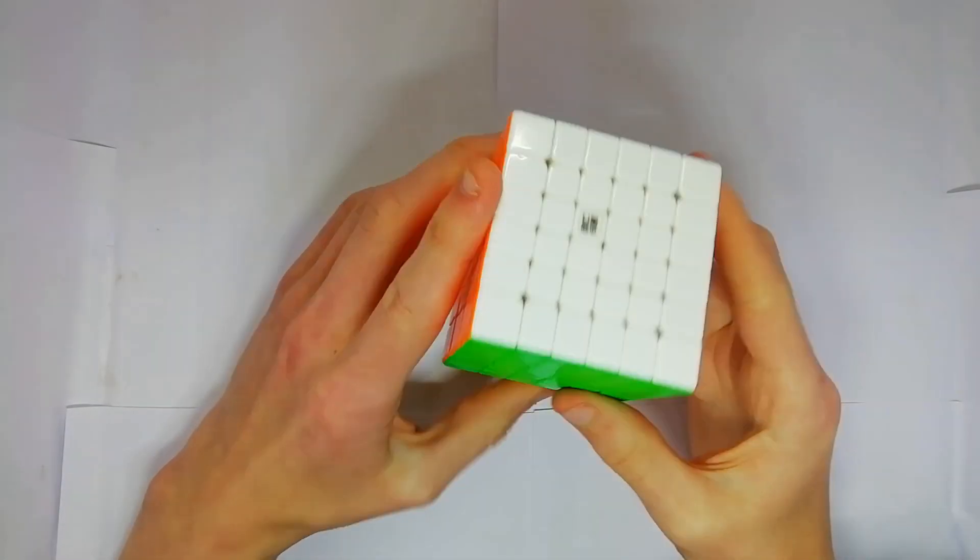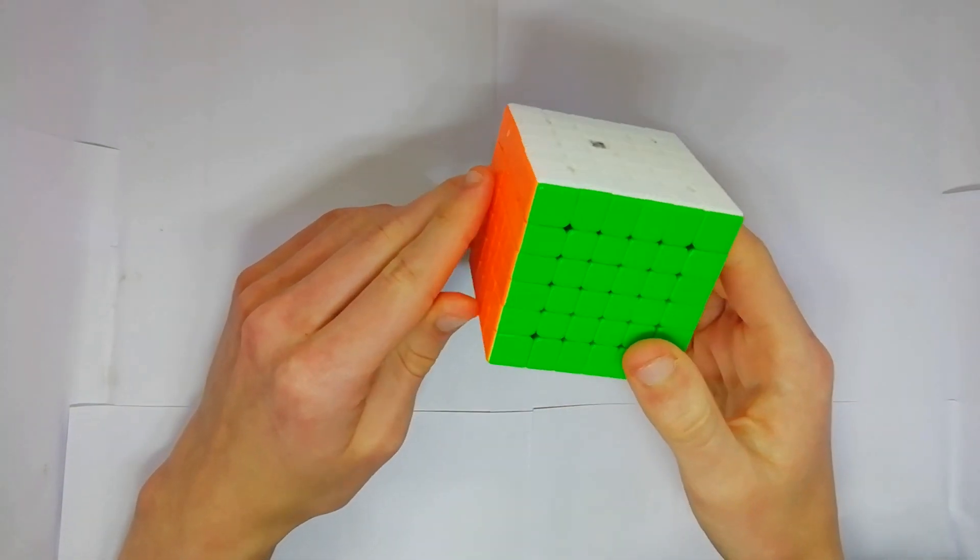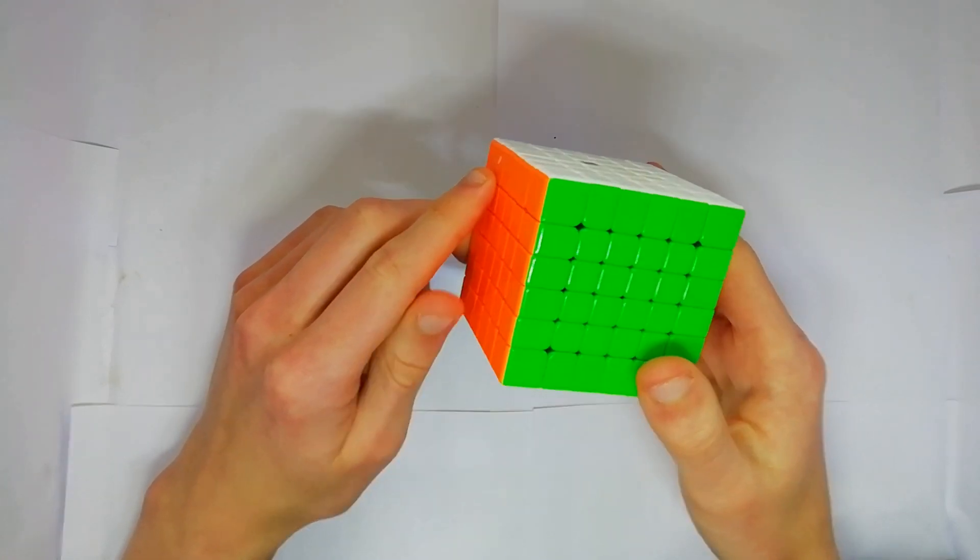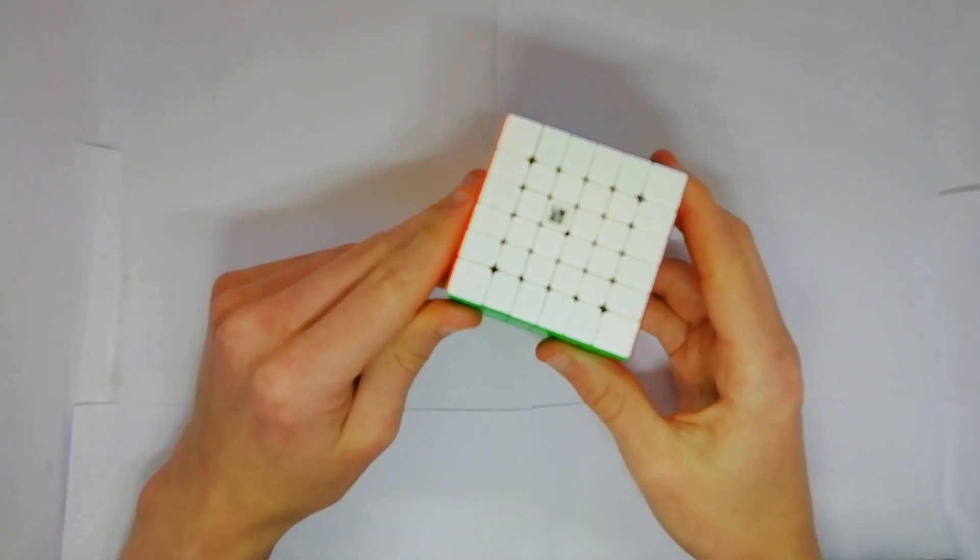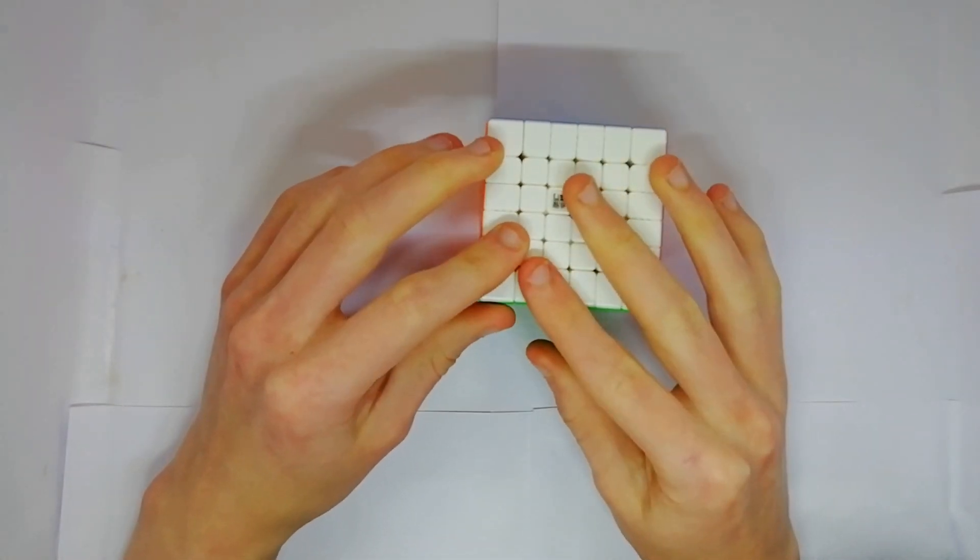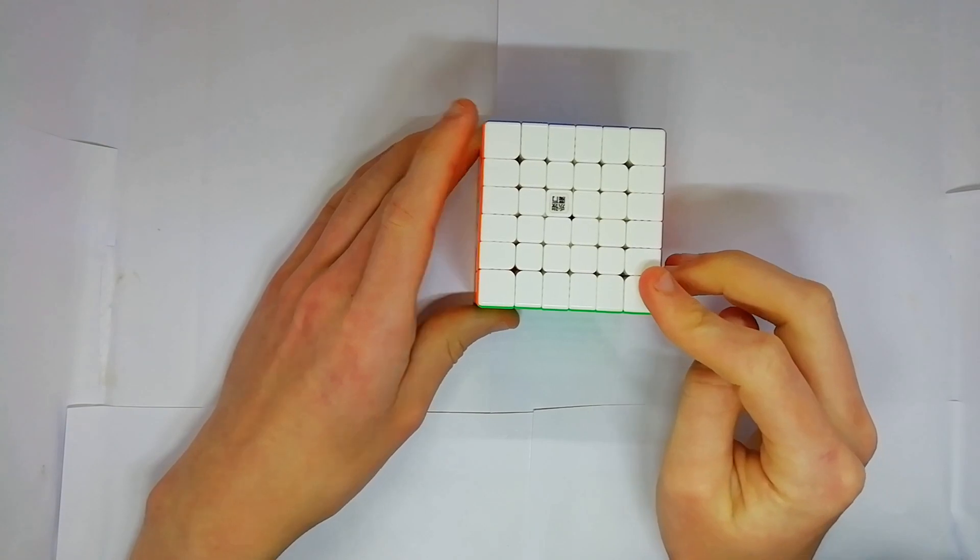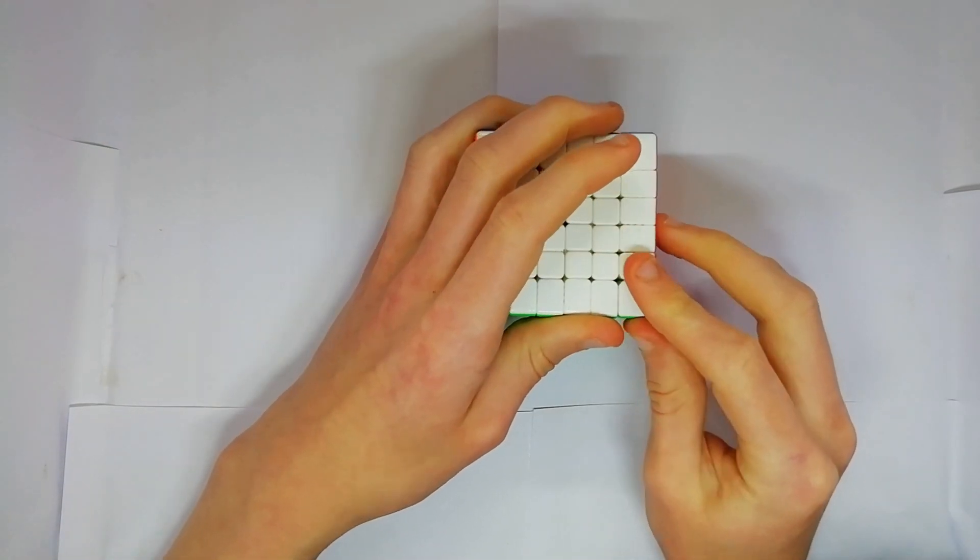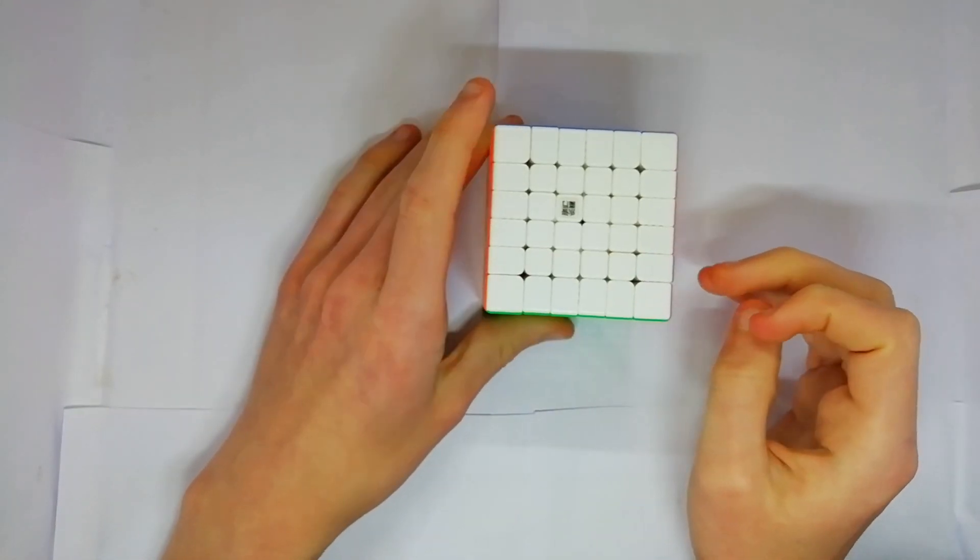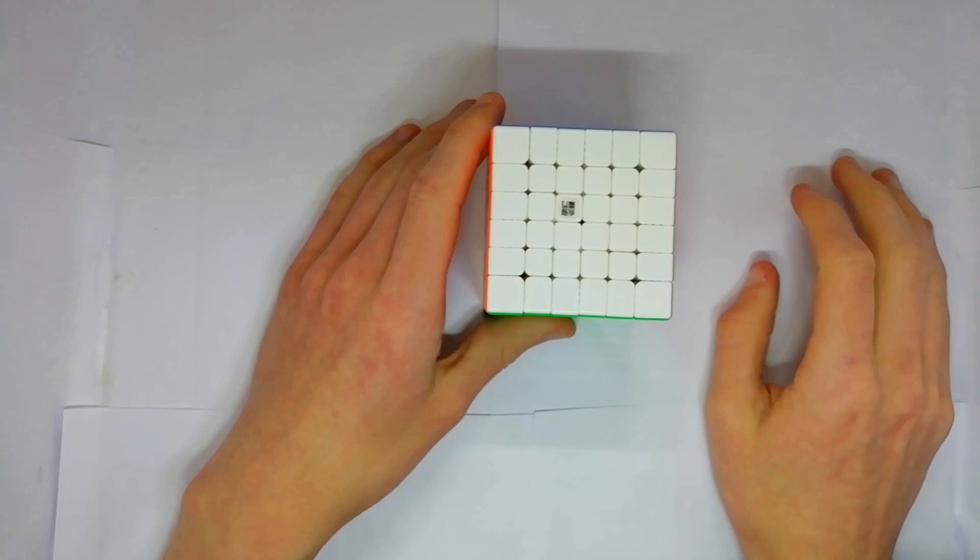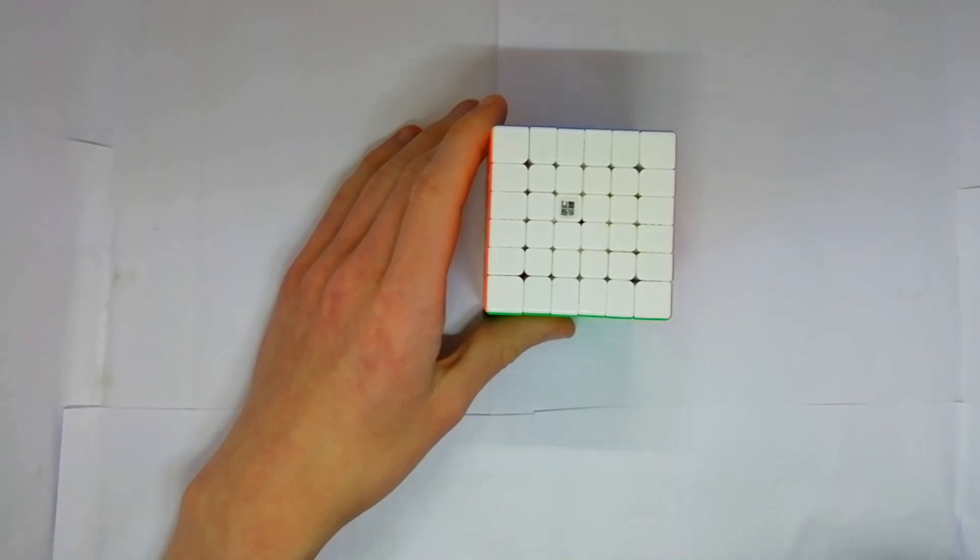So should you get this cube? Well if you're looking for a 6x6 and you're on a very low budget then this is probably the 6x6 for you. The only 6x6 I think is better than this is the MGC 6x6 which is only slightly more expensive, so in most cases it's probably best to go for that, but this is the best really budget 6x6.